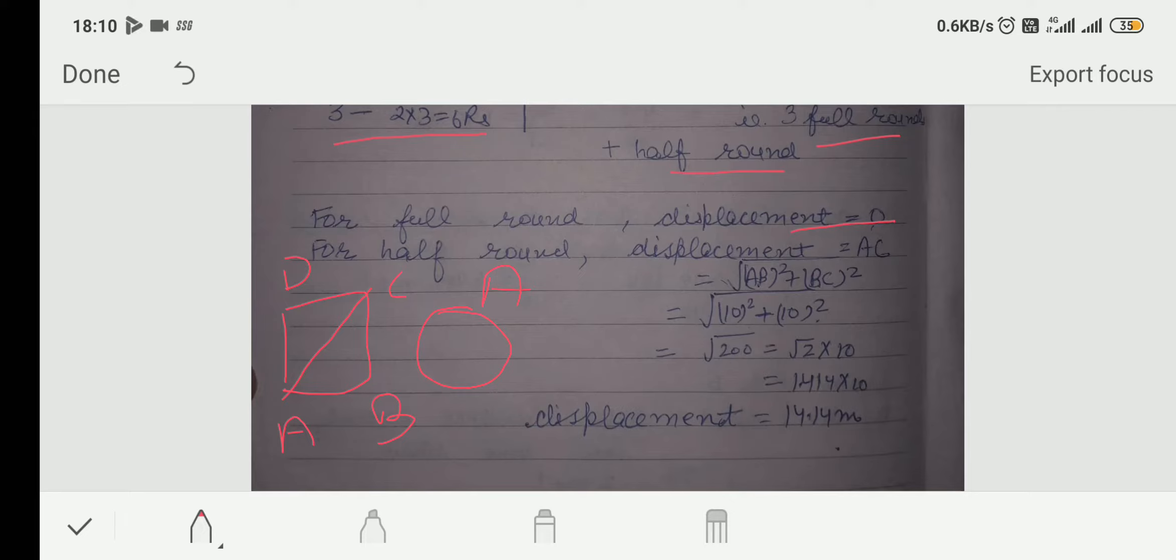Displacement is shortest distance. So, what is the shortest distance in triangle A, B, C? It will be A, C.